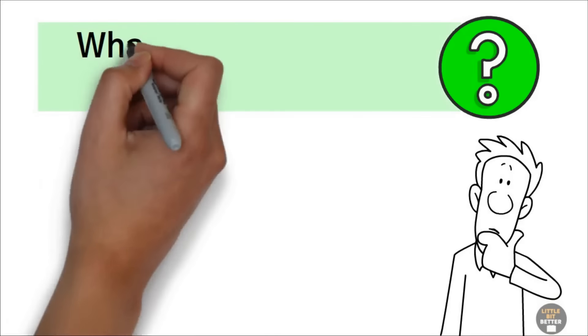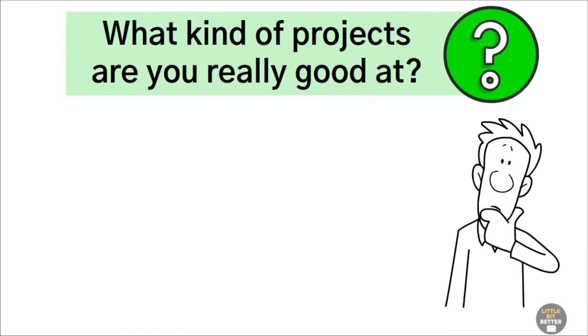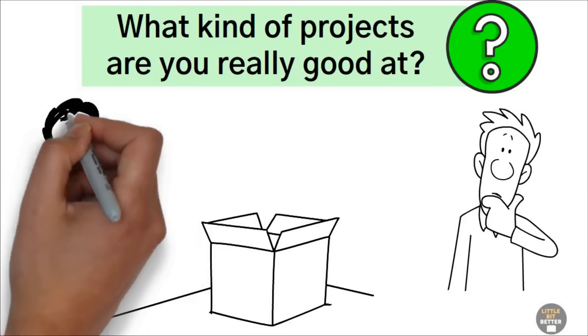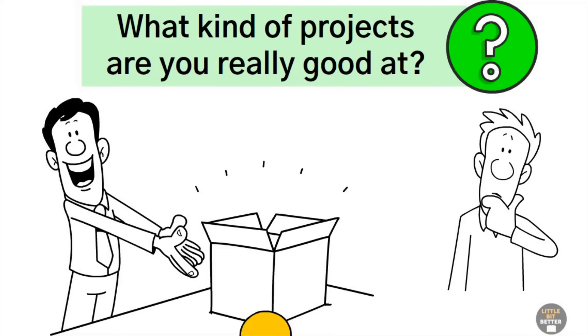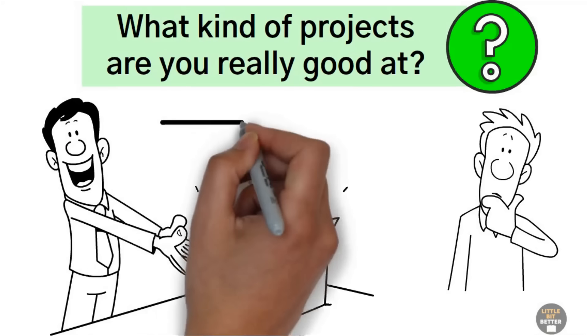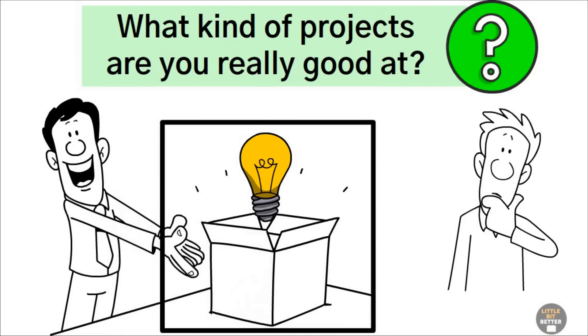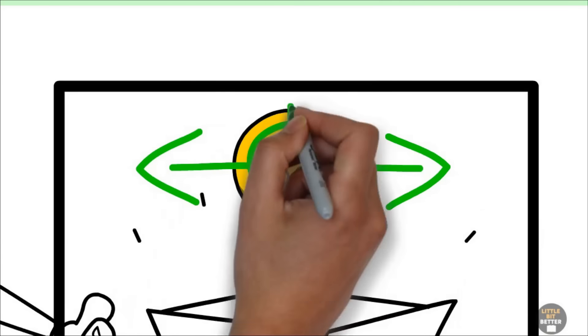Ted gave Alex his first assignment. He asked him an important question. A question every entrepreneur needs to ask. What kind of projects are you really good at? The reason Ted started with this question is because the first step in creating a business that can thrive without you is identifying the right product to sell. And the right product is the one that has the potential to scale.